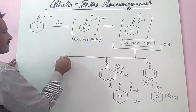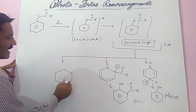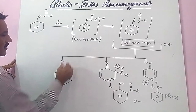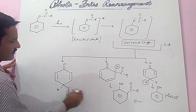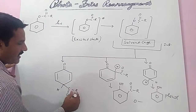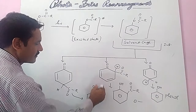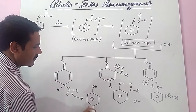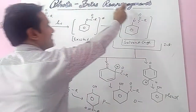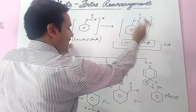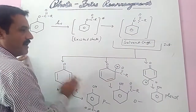Then hydrogen shifts and the bond shifts, converting into the ortho hydroxy ketone. Similarly, with shifting of hydrogen, it converts into the para hydroxy ketone. So in Photo-Fries rearrangement, first light is absorbed, then excited state, then solvent cage, and then three products — phenol, ortho hydroxy ketone, and para hydroxy ketone — are formed.